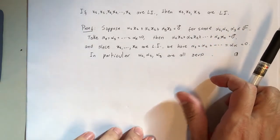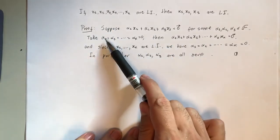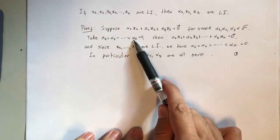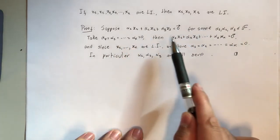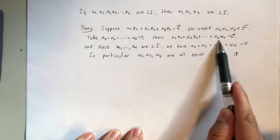And the proof will be the following: we define α₄, α₅, up to αₖ - all these numbers to be zero. And then we look at what this linear combination here of k vectors is.